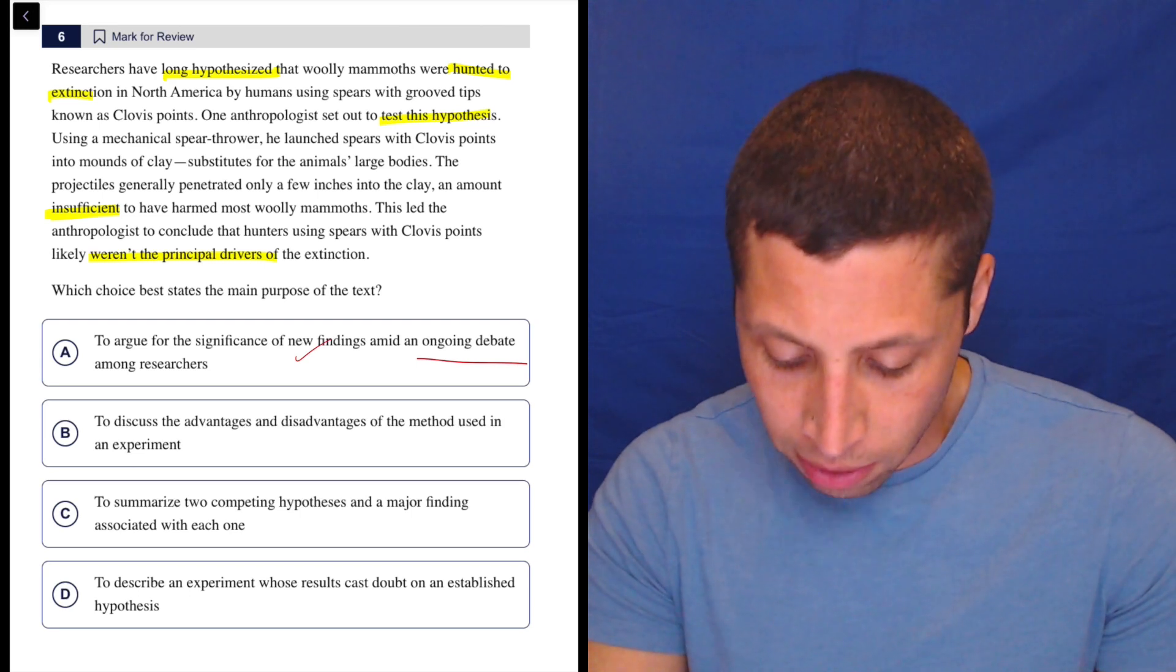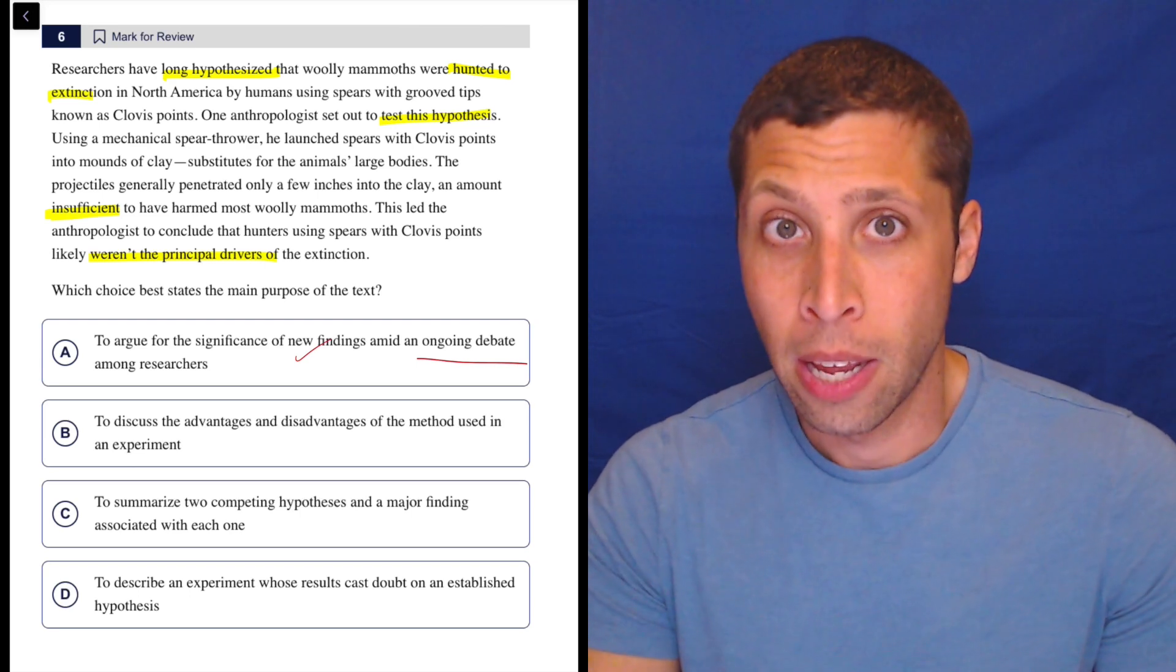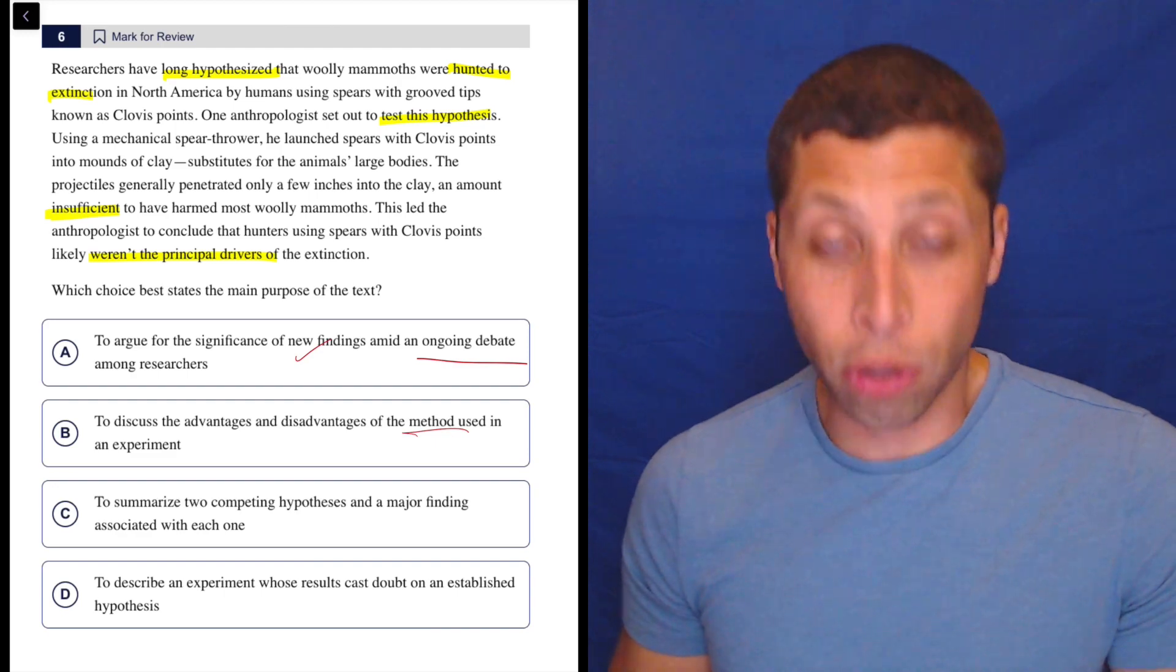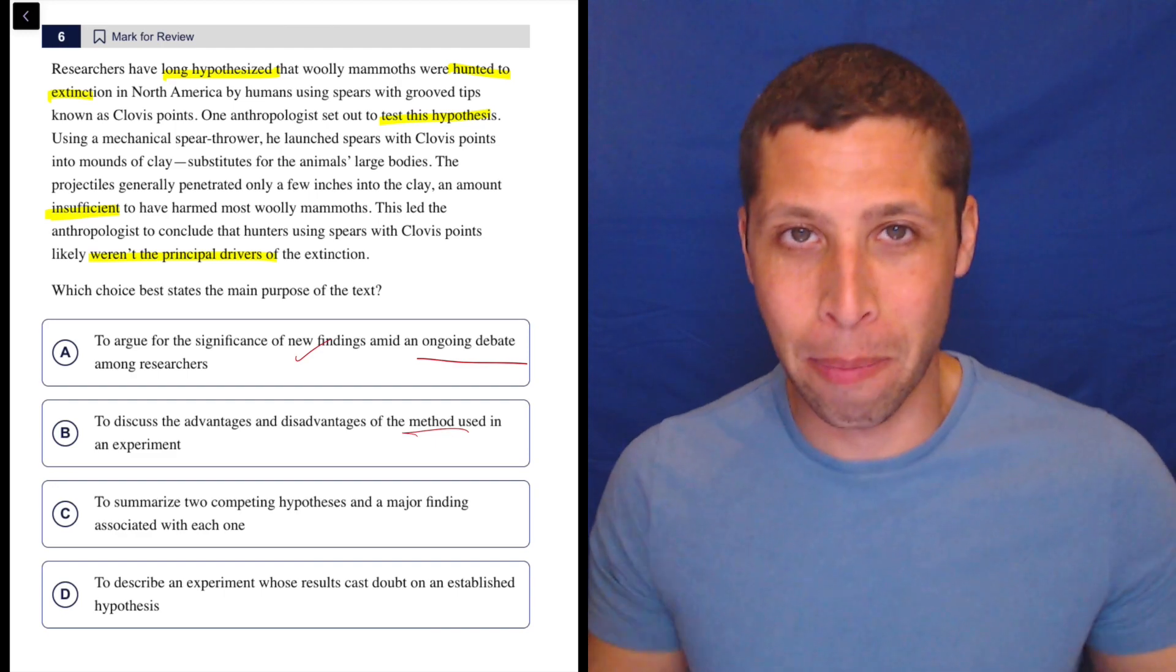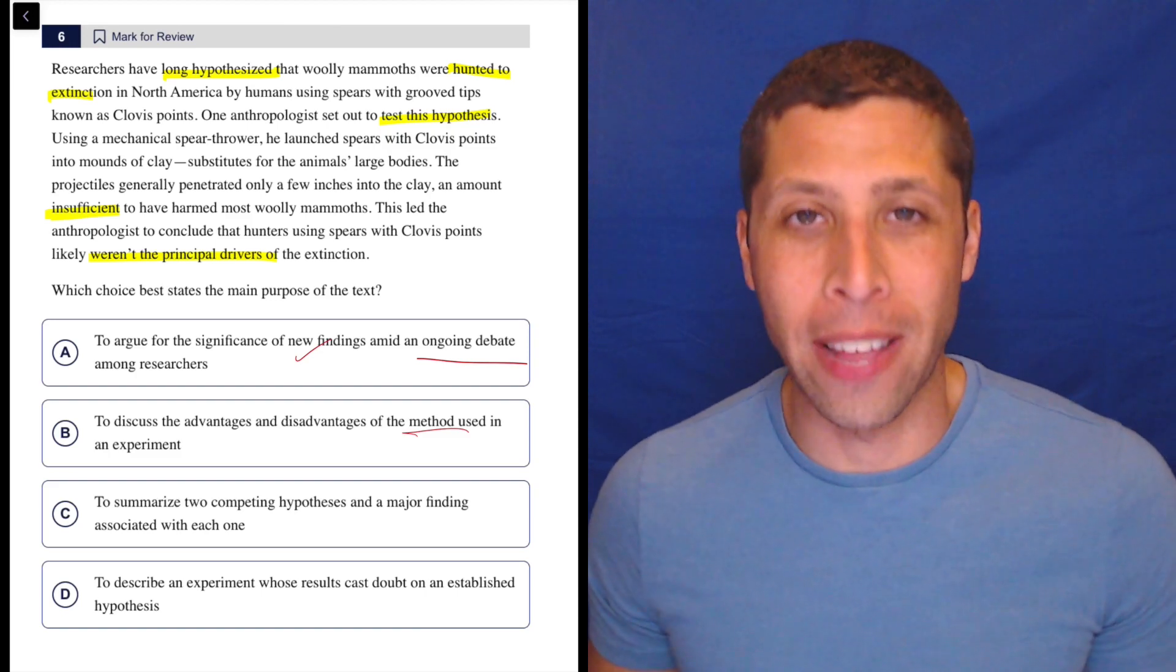B, to discuss the advantages and disadvantages of the method used in an experiment. No, they describe the method. Notice I didn't highlight any of it because I didn't care because the passage is not about the method itself.